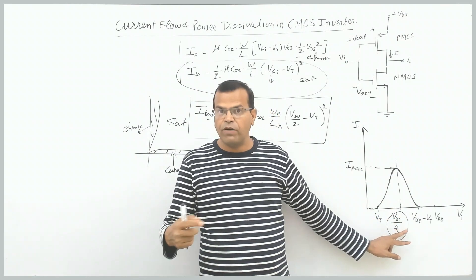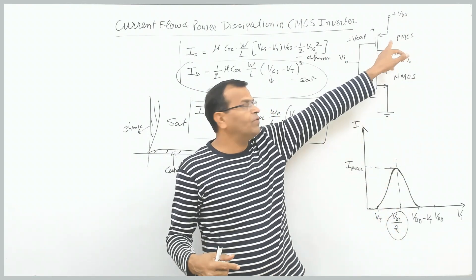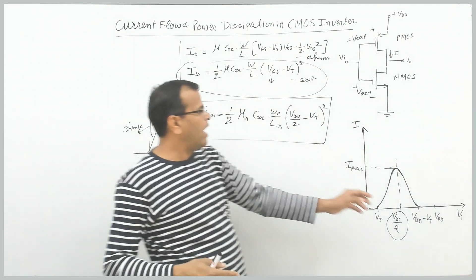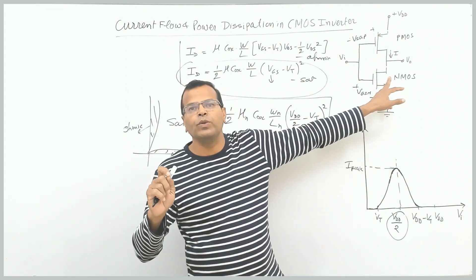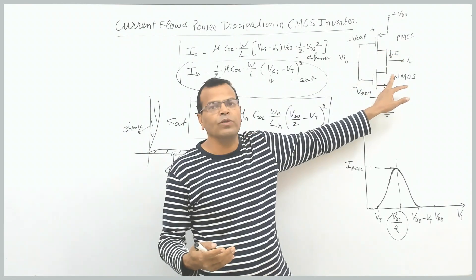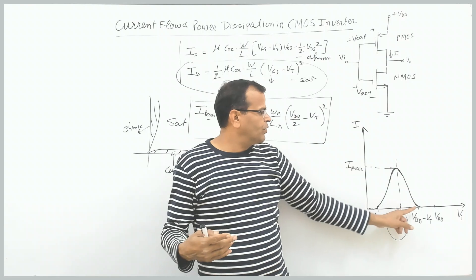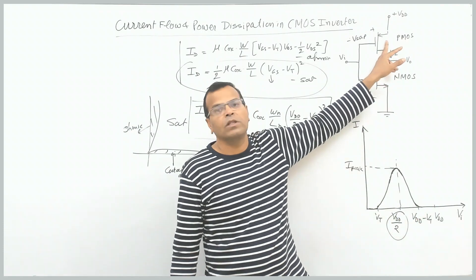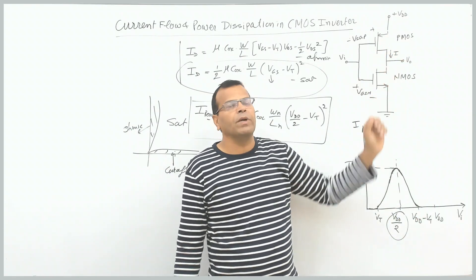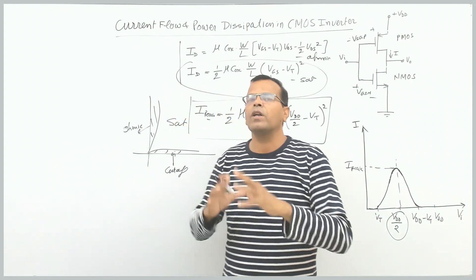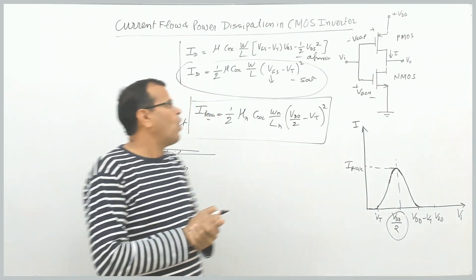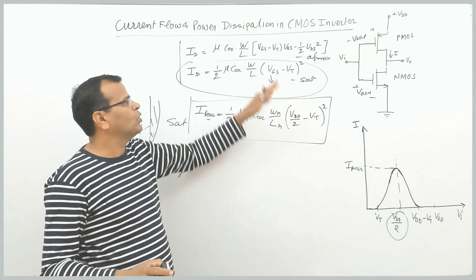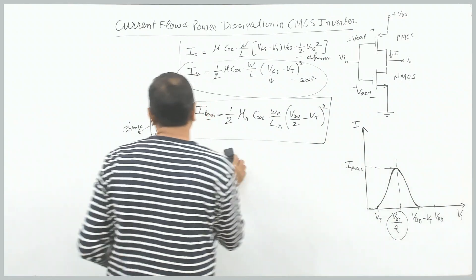Once input voltage becomes more than VDD/2, PMOS enters from ohmic into saturation, and NMOS enters into ohmic region. When input voltage becomes more than VDD minus threshold voltage, PMOS enters into cut-off while NMOS remains in ohmic. That is a symmetrical operation — you can refer to my previous video on voltage transfer characteristics. This is how we get the expression for maximum current through the CMOS inverter.